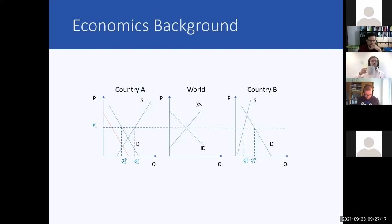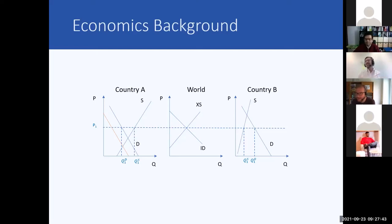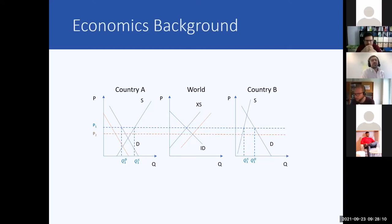What is happening on the whole system? What would you expect with the world market price? It's going to reduce. As we can see, there's more supply in country A than before due to decreasing demand, so there's excess supply on the world market. The export supply function moves to the right and a new world market price is established.